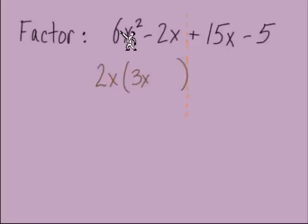2x times what two terms are going to equal these two terms that we started with? Well, the 2x times 3x will give us the 6x squared. We got the 2 times 3 to the 6. 1x needs a second x to get us to the x squared. And 2x times what will get us to negative 2x? We need in there just a negative 1.